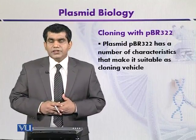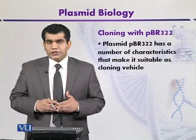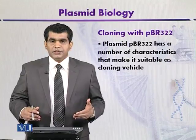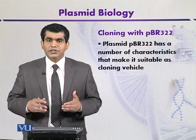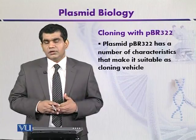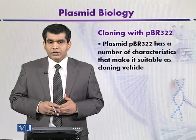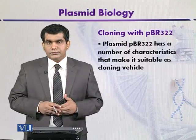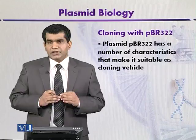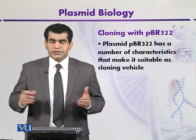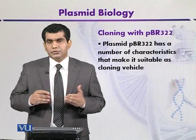Another desirable property is that during isolation, this plasmid is mostly present in supercoiled form, so its isolation is relatively easy. Moreover, DNA fragments having a length of up to 10 kilobases can be cloned using PBR322.